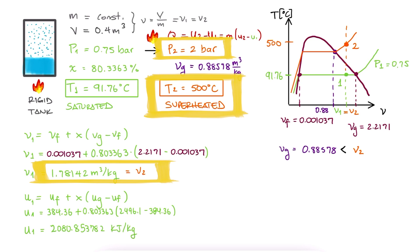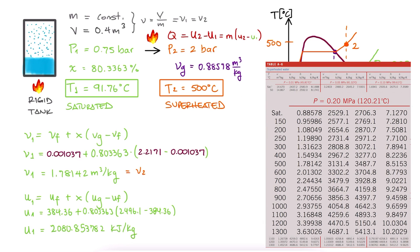Now, for state 2, we don't need to find quality values. We know that our water is superheated, and therefore, at that pressure and temperature, the specific internal energy value is given by the table. This would be U2.